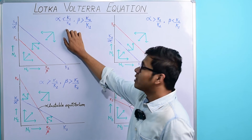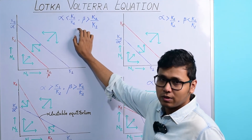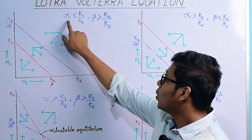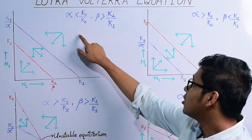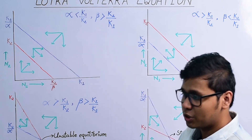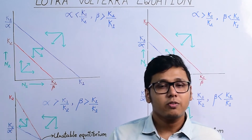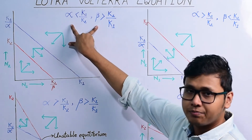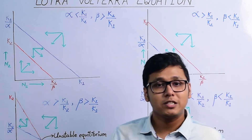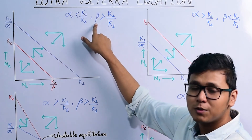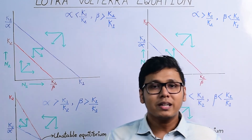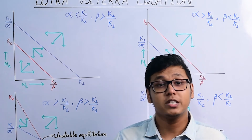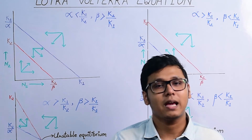The first condition is alpha < K₁/K₂ and beta > K₂/K₁. This means the interspecific competition on species 1 is lower than intraspecific competition, but for species 2, interspecific competition is higher than intraspecific competition. Alpha being lower means the effect of species 2 on species 1 is lower, and beta being greater means the effect of species 1 on species 2 is greater. This tells us that species 1 is competitively more superior — it is going to win this competition and species 2 will go extinct from that habitat.